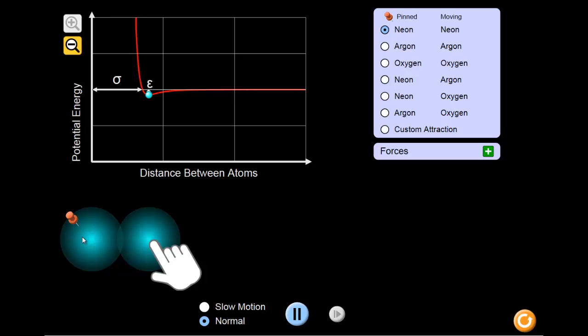For the sake of this simulation, the neon atom on the left is stuck where it is and cannot move, but the neon atom on the right can be moved to be closer to or farther away from the one on the left. We can move the atoms so that they are farther apart from each other.